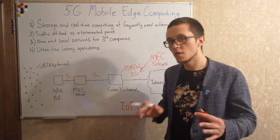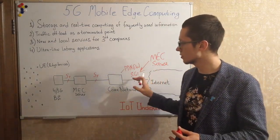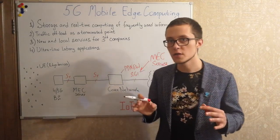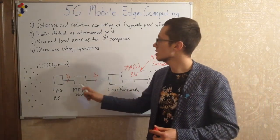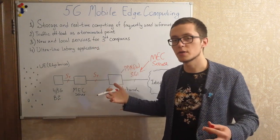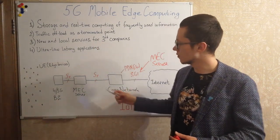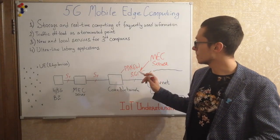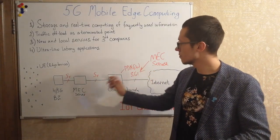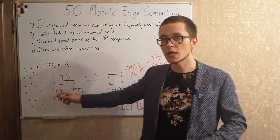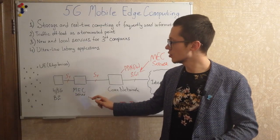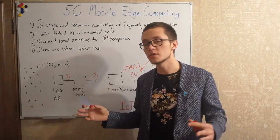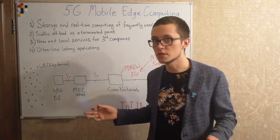There are many possible solutions for where to locate this server. For some traffic, this server is a terminated point where data is stored and processed. But for other traffic, this server is transparent — as if there is no server at all. Physically, this server may even be located inside a base station, or one server may operate with a cluster of 10 or even thousands of base stations.